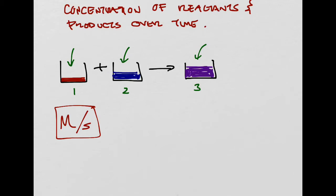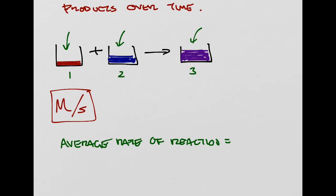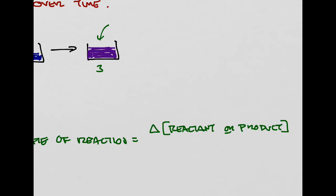It doesn't make too much of a difference whether you're looking at how much the reactants are being consumed or the products are being created — you can look at it either way. However, when we put this together symbolically, we create something called an average rate of reaction. The average rate of reaction equals the change in concentration of whatever you're picking — reactant or product — using bracket notation for concentration, divided by the change in time.